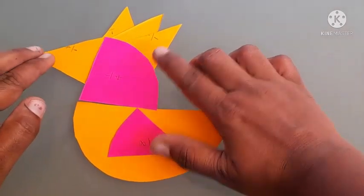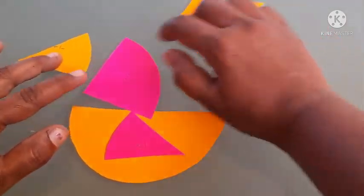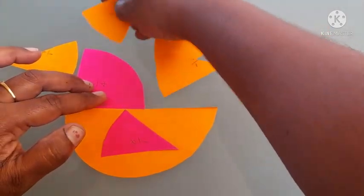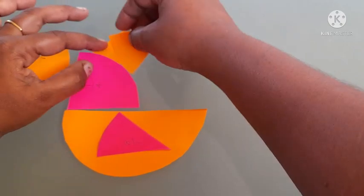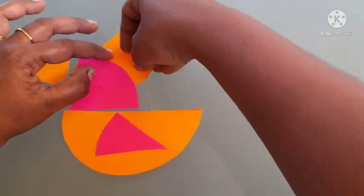Next, peacock. Here I have used one-half as a body and one-fourth as the head, and I have used three one-eighths as crown and also beak.